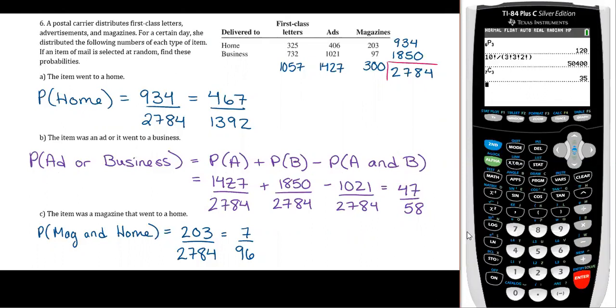So 1427 divided by 2784 plus 1850 divided by 2784 minus 1021 divided by 2784.